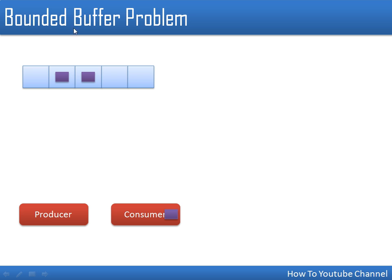In the bounded buffer problem, the producer will wait when the buffer is full — that is the first conditional variable. The second one: the consumer will wait if the buffer is empty — so that is the second conditional variable. In total we need two conditional variables.